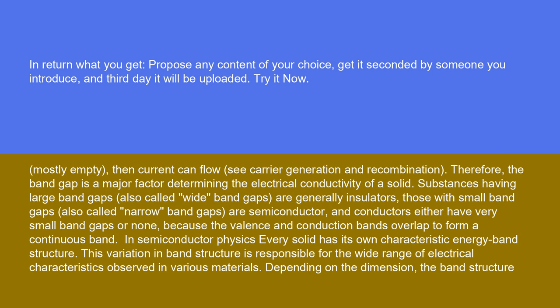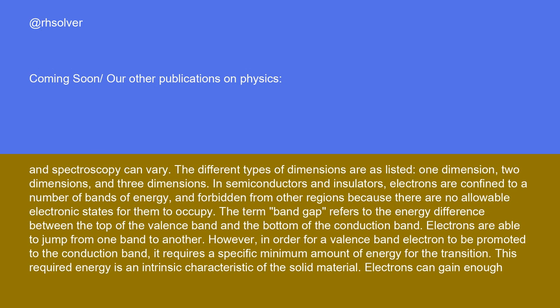In semiconductor physics, every solid has its own characteristic energy band structure. This variation in band structure is responsible for the wide range of electrical characteristics observed in various materials. Depending on the dimension, the band structure and spectroscopy can vary. The different types of dimensions are as listed: one dimension, two dimensions, and three dimensions.